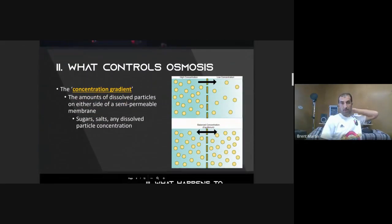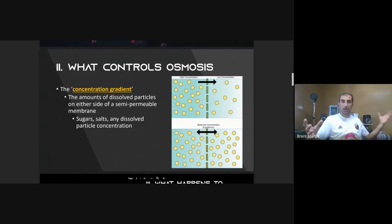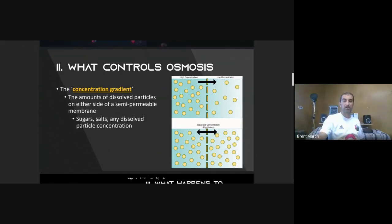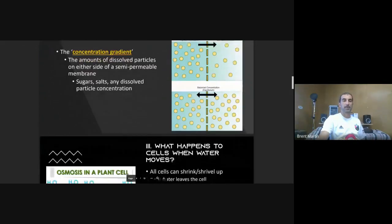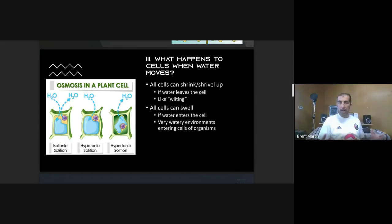What controls osmosis? The same thing that controls diffusion — a concentration gradient. There has to be an area of high concentration of dissolved particles or water and an area of low concentration. That separation of concentrations creates a concentration gradient.